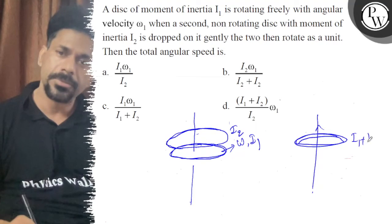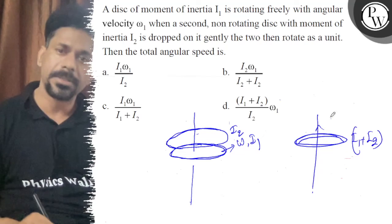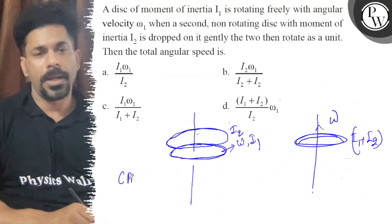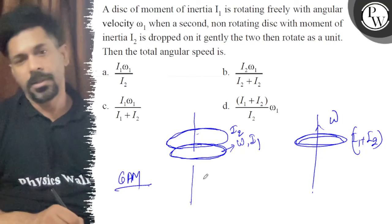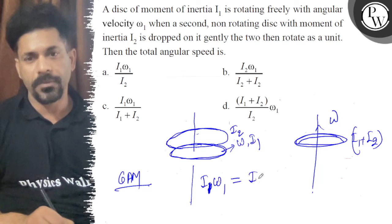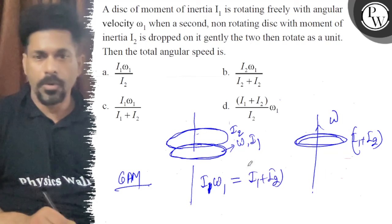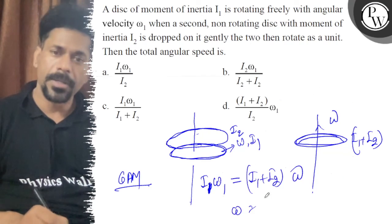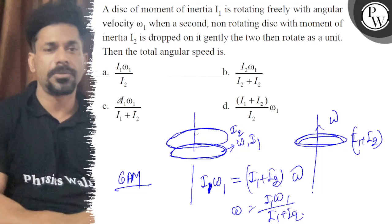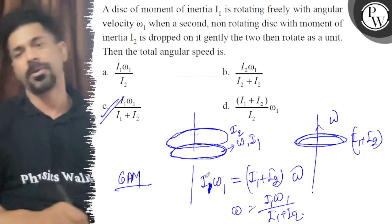I₁ plus I₂. So using the conservation of angular momentum: initially I₁ω₁ is equal to final (I₁ + I₂)ω. So ω = I₁ω₁ upon (I₁ + I₂). That means if you look at this, the first option, C option, is the best.